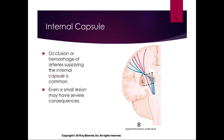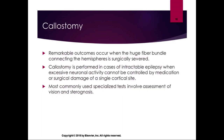The internal capsule is the white matter area in the thalamus. Occlusion or hemorrhage of arteries supplying the internal capsule is common, and even a small lesion can have severe consequences because of all the important information traveling from the thalamus to the cerebral cortex.